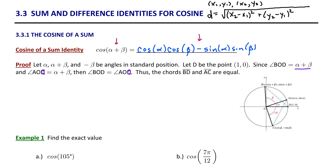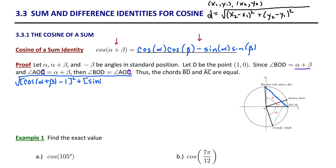Let's begin by applying that distance formula to find the length of segment BD. We're going to find the square root of the difference of the x-coordinates squared plus the difference of the y-coordinates squared. For point B, the x-coordinate is cosine(α+β), and for point D, the x-coordinate is 1. The y-value at point B is sine(α+β), and the y-value at point D is 0.